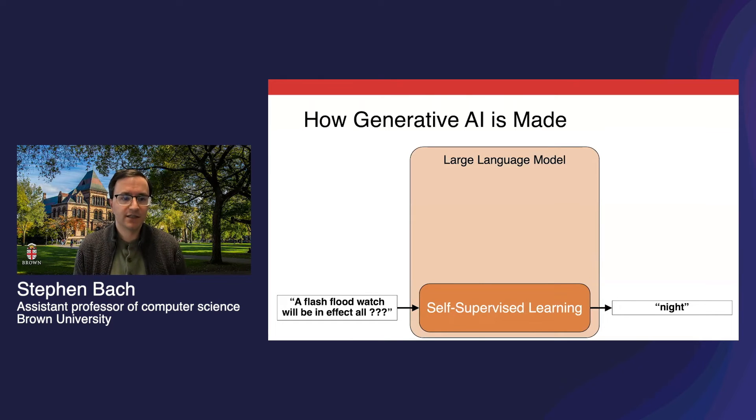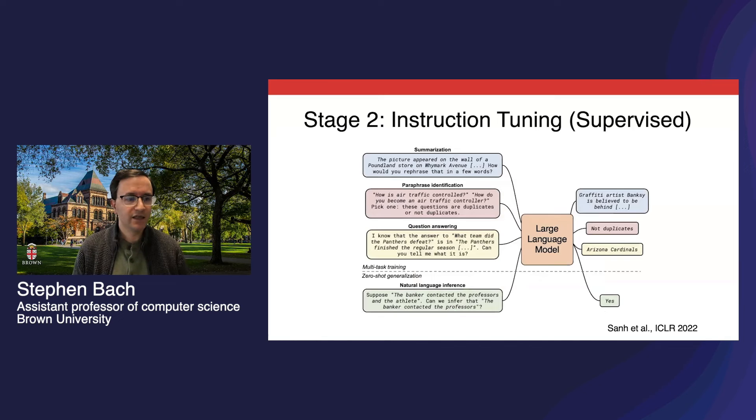But the big advances in the last couple of years have come from going beyond self-supervised learning. Now, that's just the starting point for further training. The next stage is supervised learning. In this stage, the model is explicitly trained to follow instructions, which is why it's now often called instruction tuning. The model is trained to perform a variety of tasks from summarization to question answering and inference.